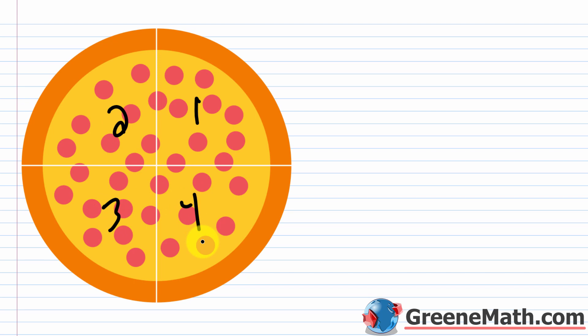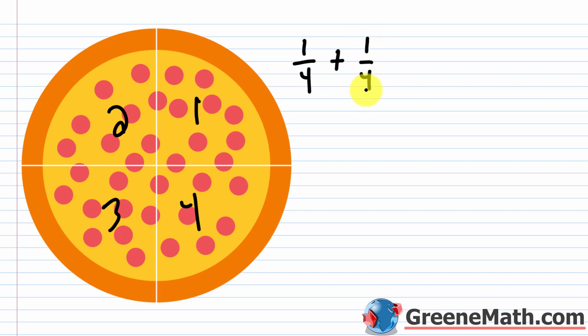Suppose I eat a slice for breakfast, another one for lunch, and a final one for dinner. How much of the pizza did I eat? Three-fourths. How much is left? One-fourth. I ate one, two, three pieces — so I could say this is one-fourth plus one-fourth plus one-fourth, which gives me three-fourths.